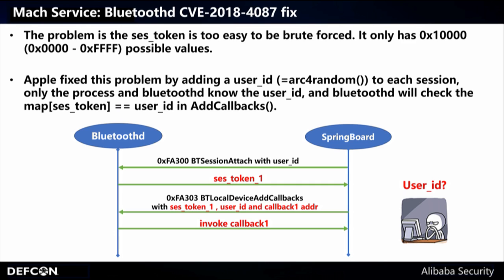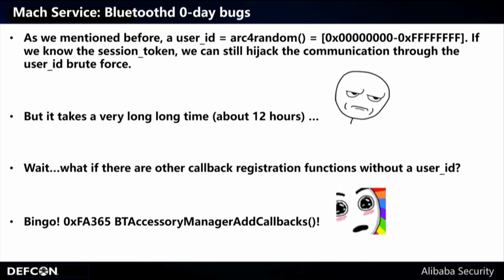Apple fixed this problem by adding a user ID to each session, which is a random number. Only the process and BluetoothD know the user ID, and BluetoothD checks the mapping of session token with user ID in the add callbacks function. Since the user ID is a very large random number, if we know the session token we could still try to hijack communication through user ID brute force. But when I tried it I found it would take a very long time — about 12 hours. So this is not a good bug.